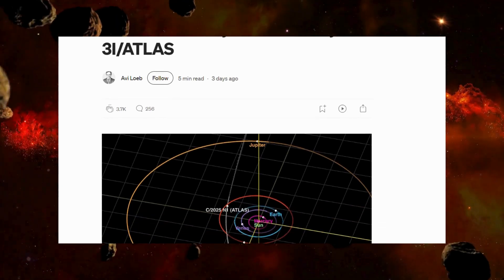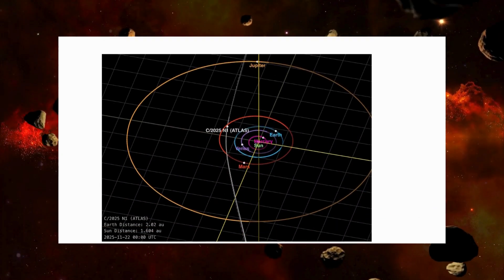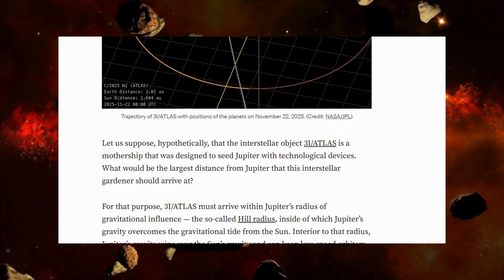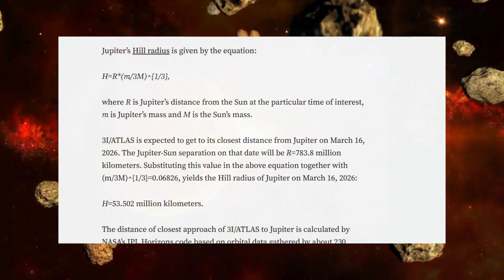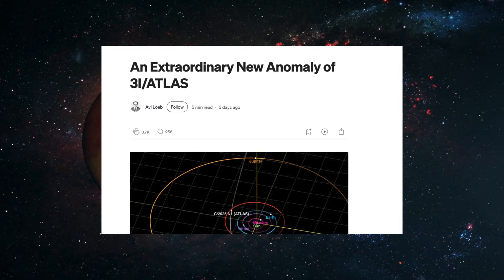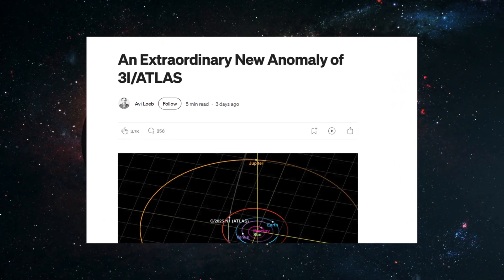On November 23rd, Avi Loeb dropped another major update about 3i Atlas, and with it, we've officially identified what scientists are now calling the 13th anomaly. And I'm going to be honest with you, this one might be the strangest of them all.